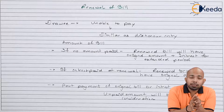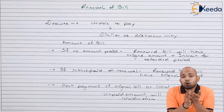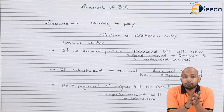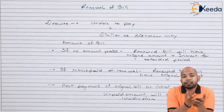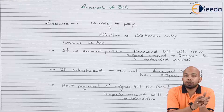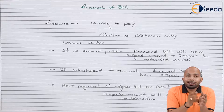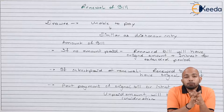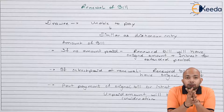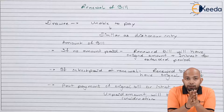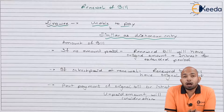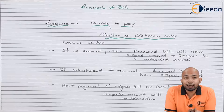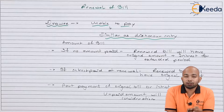Supposingly it happens that the drawee is not able to make the payment and he upfrontly asks for the renewal of bill. The entry that has to be passed is the same which is in the case of dishonor of bill. Now the question comes to us: what is the amount of bill that will be mentioned in the renewed bill?